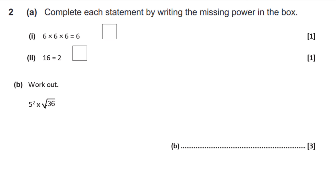Question 2. Complete each statement by writing the missing power in the box. Six times six times six is six to the power of three. And 16 is two to the power of what? Well, two to the power of one is two, squared is four, cubed is eight, and to the power of four is 16. So that's two to the power of four. Then work out five squared times the root of 36. Five squared is 25, the root of 36 is six, so 25 times six is 150.